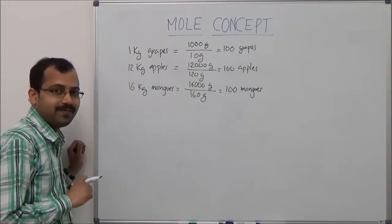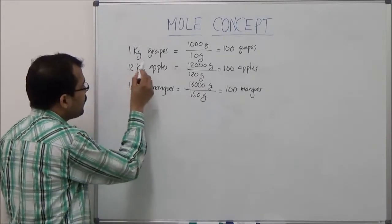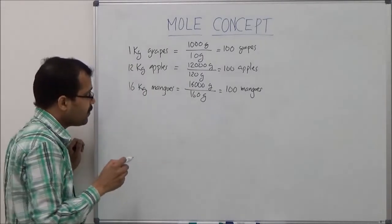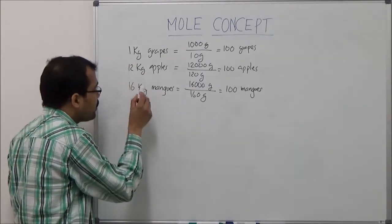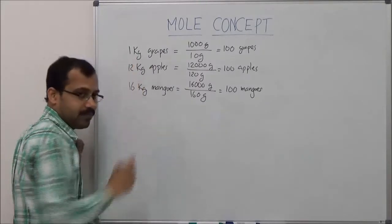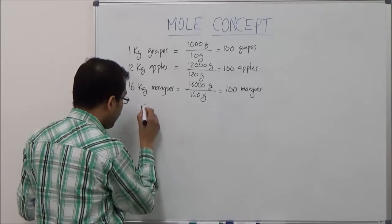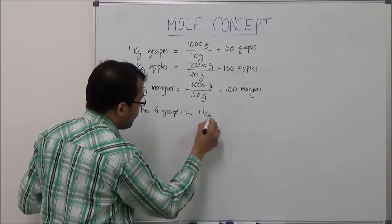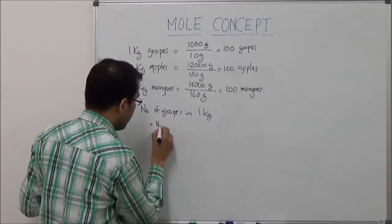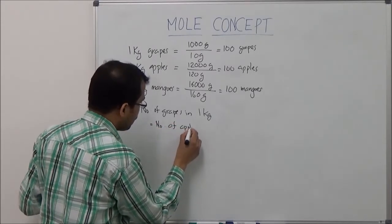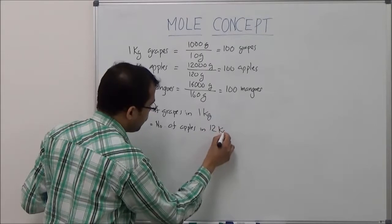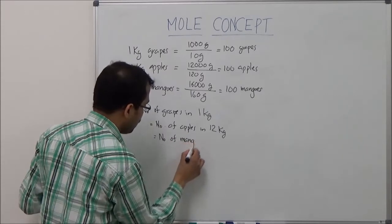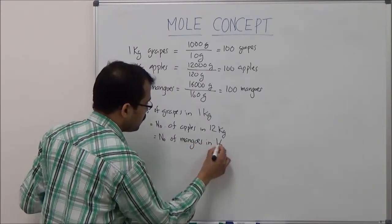In conclusion, if the mass of the apple is 12 times the mass of the grape, and the mass of the mango is 16 times the mass of the grape, then the number of grapes in 1 kilogram will equal the number of apples in 12 kilograms, which will equal the number of mangoes in 16 kilograms.